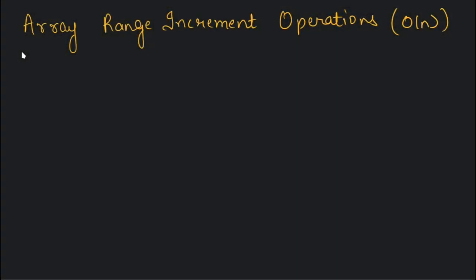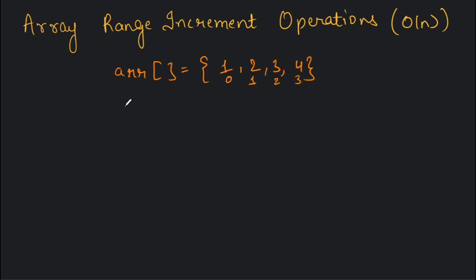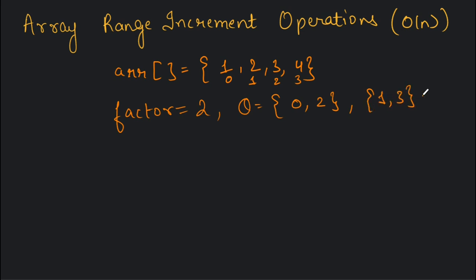In today's video we will see how we can do array range increment operations in linear time. We are given an array, let's say arr = [1, 2, 3, 4], and we are given a factor equal to two, and we are given some queries in the form of l and r: [0,2], [1,3], and [2,3].